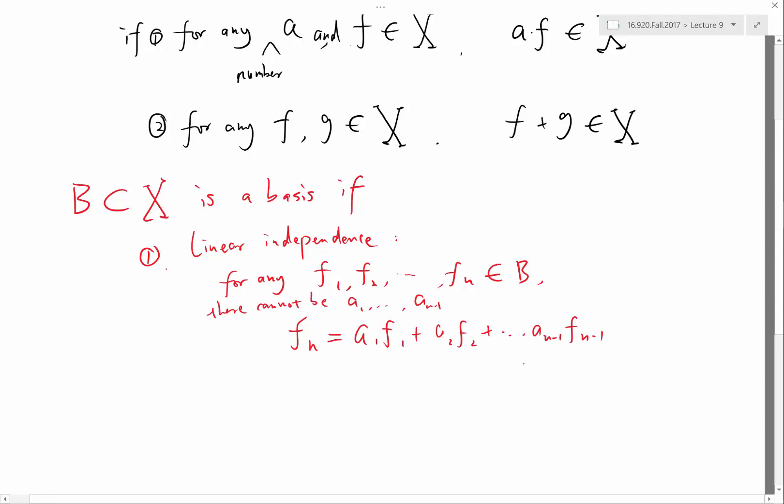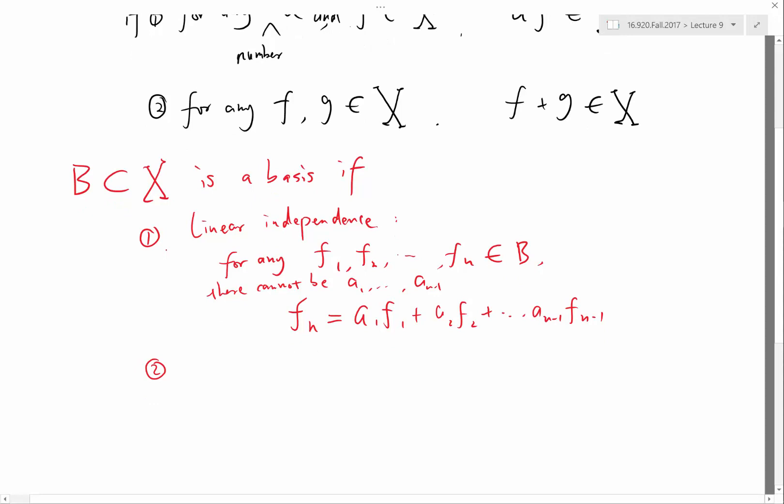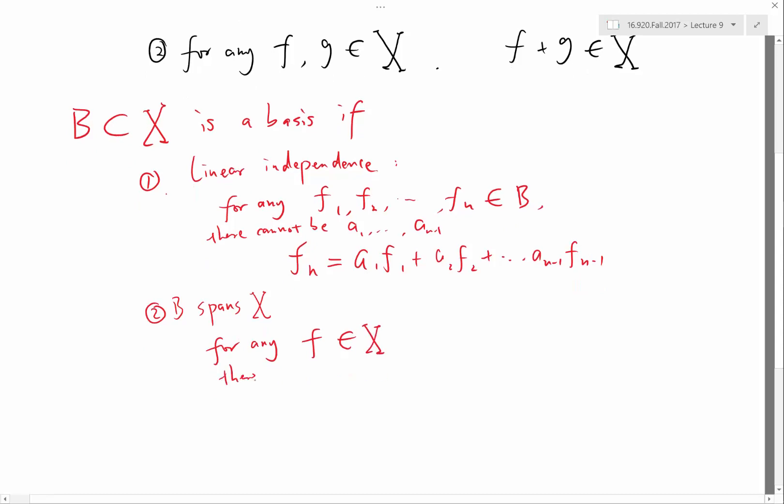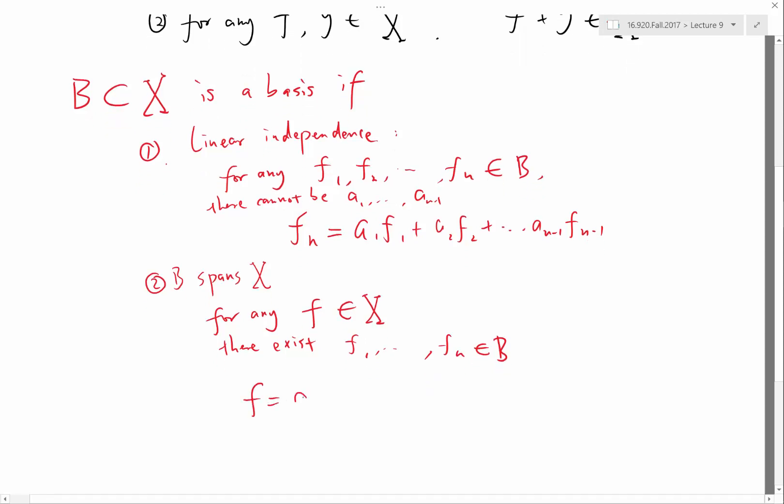So you cannot express any member of the basis as a linear combination of any other basis. But it is, these spaces is sufficient to express any other element as a linear combination. So that is, it spans, the B spans X. That is saying that for any F inside this X, there always exist F1, et cetera, to Fn inside this B, while n can be any number, so that F is equal to a1 F1 plus a2 F2 plus et cetera plus an Fn.